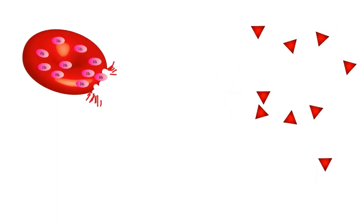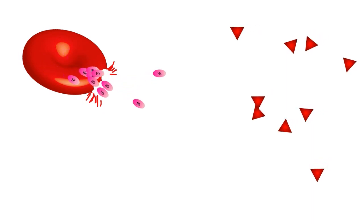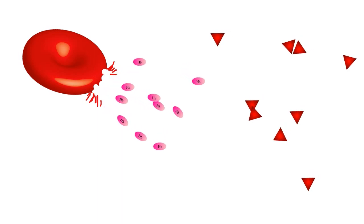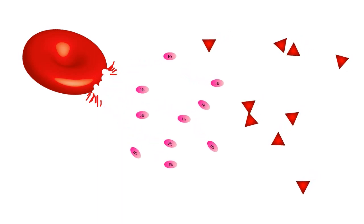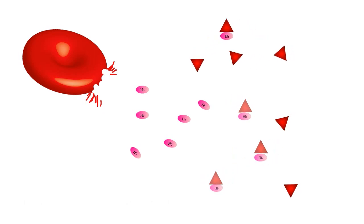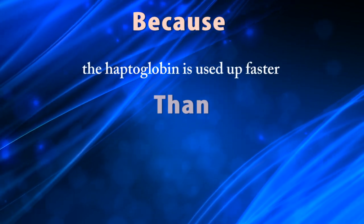When an increased number of RBCs are damaged or break in hemolytic anemia condition, they release their hemoglobin into the blood, increasing the amount of free hemoglobin in circulation. When large numbers of RBCs are destroyed, haptoglobin concentrations in the blood will temporarily decrease, because the haptoglobin is used up faster than the liver can produce it.